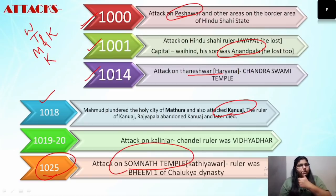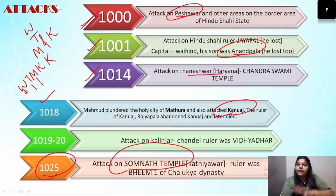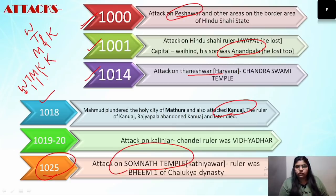To remember this, use the mnemonic W, T, M, K — W for Vahind, T for Thaneshwar, M for Mathura and Kannauj, and K for Kalenjar. After this, 1025 is Somnath temple — remember this year.